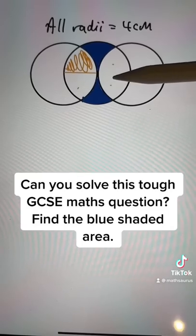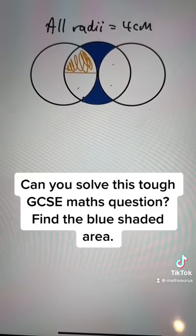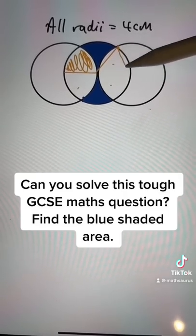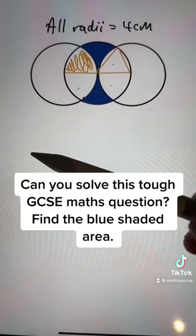One bit here, one bit here, one bit here, and one bit here. We can work that orange area out because we know all of the radii are 4 centimeters. So if I draw these three lines in, they're all radii of one of the circles, and so that's an equilateral triangle.